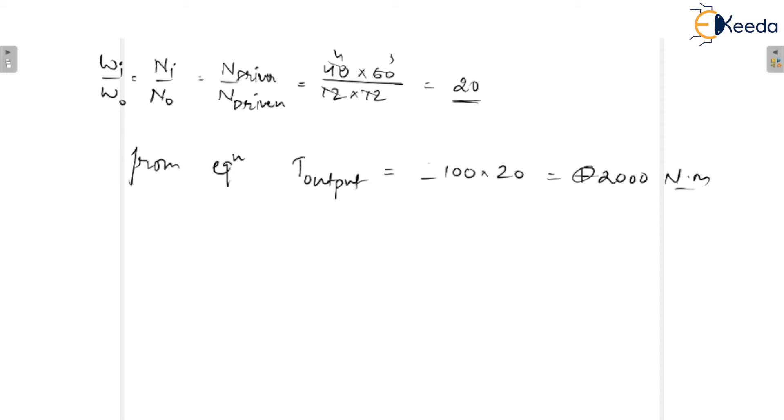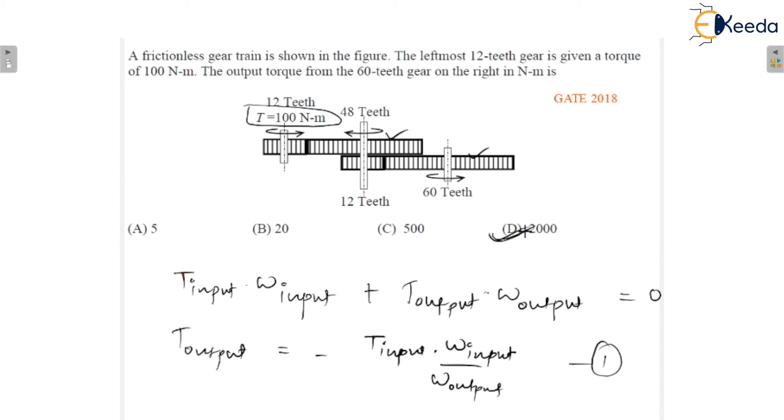So, the torque is in the opposite direction of input. Minus sign denotes the direction. So that means if one is in clockwise, the other would be in anticlockwise. If I am talking about the magnitude, magnitude would be 2000 Nm. So, option D would be the correct answer.